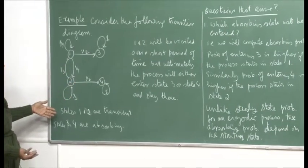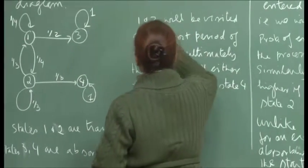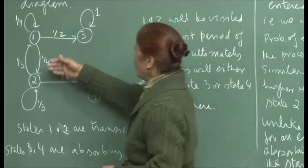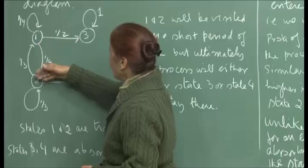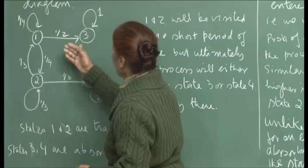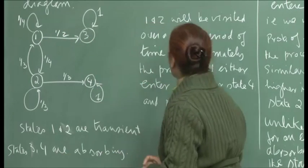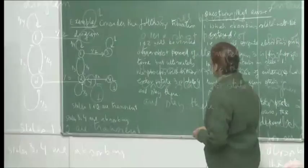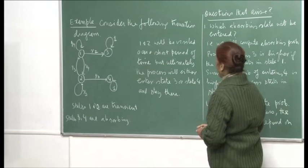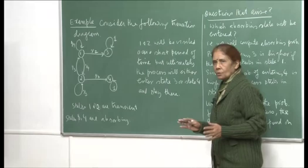Over a short period, states 1 and 2 will be visited because they are transient. The process may go from 1 to 1 itself or from 1 to 2, then 2 to 1, or 2 to 2, but then ultimately, the moment the process transitions to either 3 or 4, it stops. For a short period of time, 1 and 2 will be visited, but ultimately the process will either enter state 3 or 4 and then stay there. So the process will end.